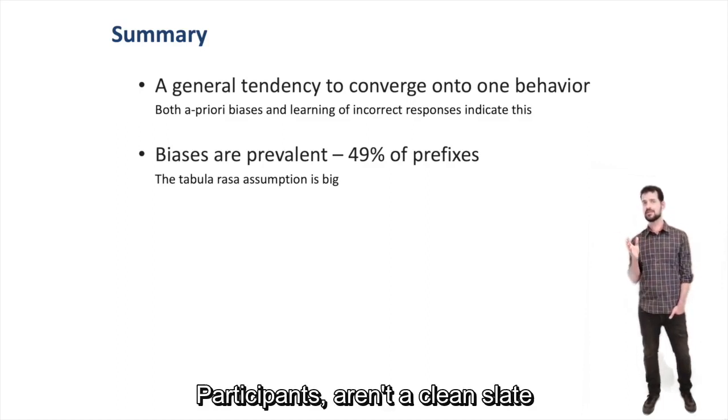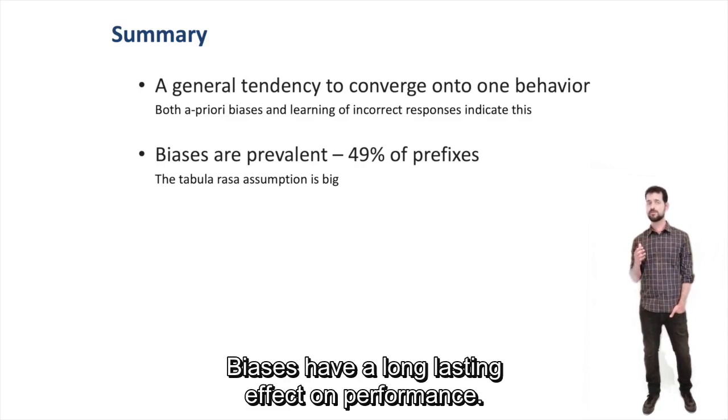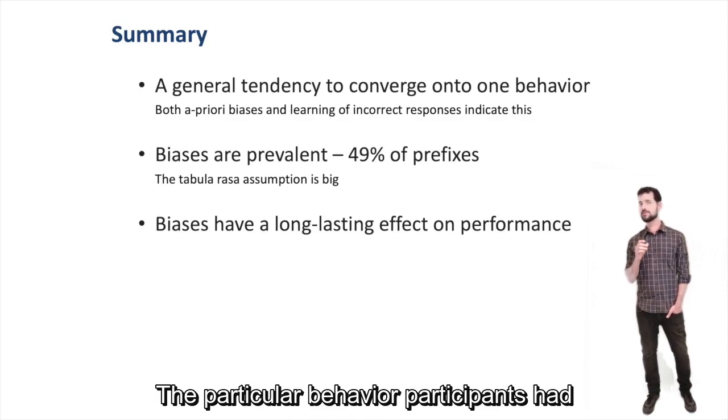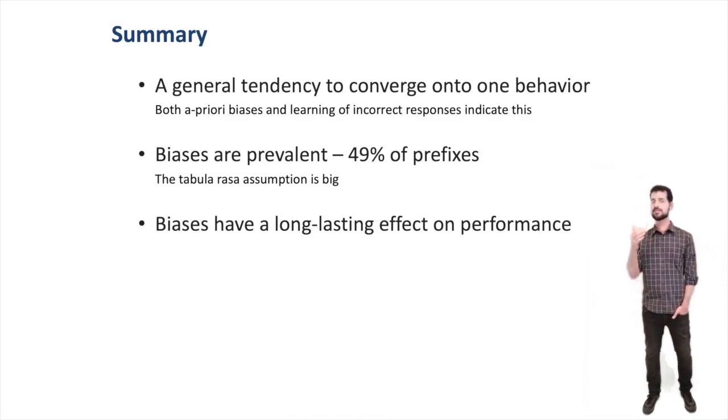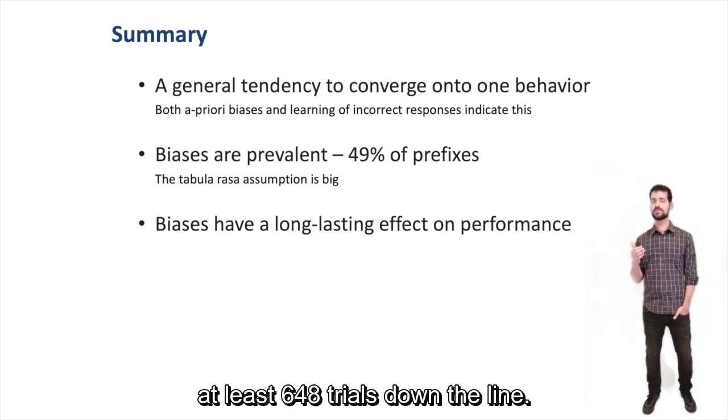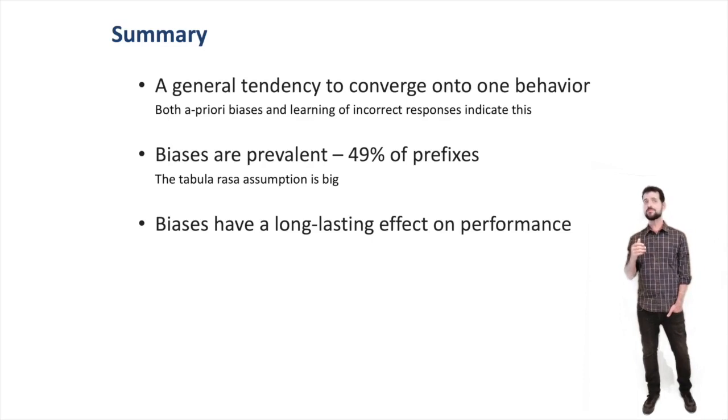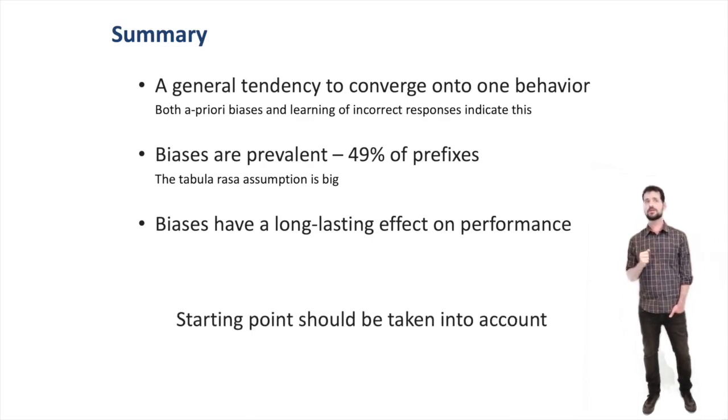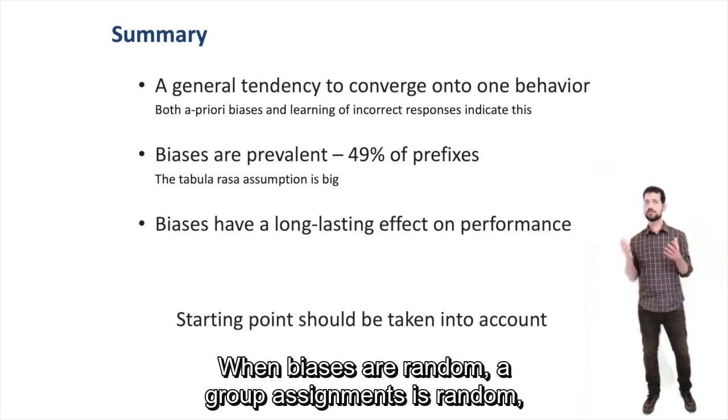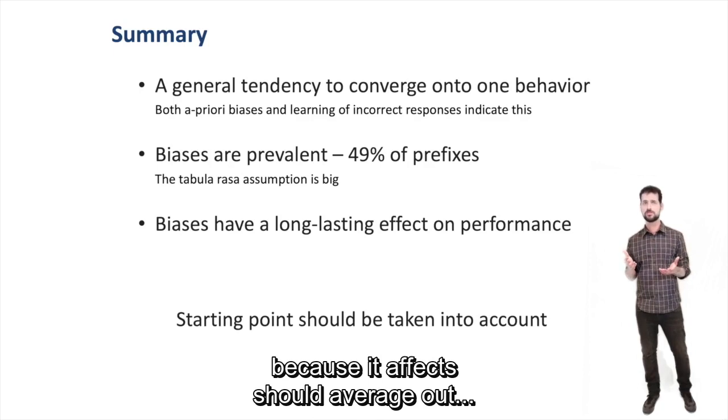The takeaway from all this, we feel, is that more thought should be given to participants' starting points. When biases are random and group assignment is random, these findings shouldn't be of great consequence because effects should average out across participants. But two points should be taken into account. Firstly, biases aren't always independent and identically distributed.